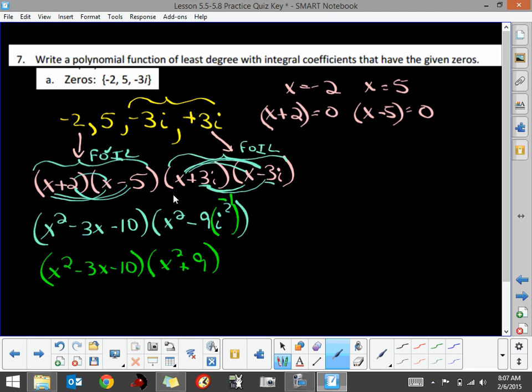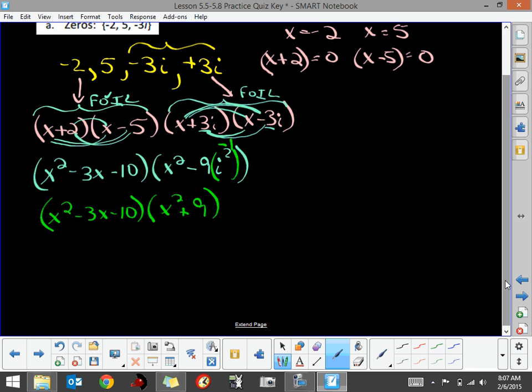Now we want to distribute these and get our polynomial. It should be a 4-degree polynomial - we have four zeros here. We'll take our x² times x², which is x⁴. Take the x² times -3x, which is -3x³. Take the x² times -10, which is -10x².